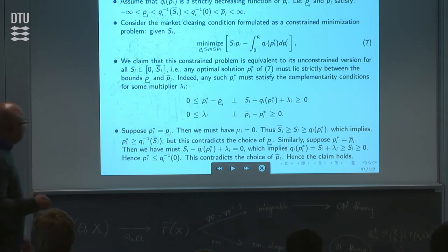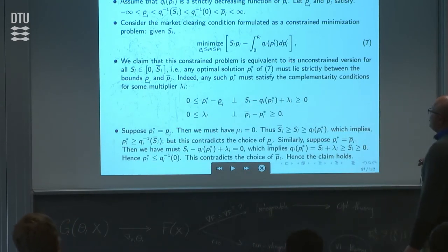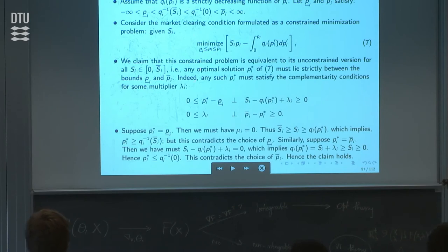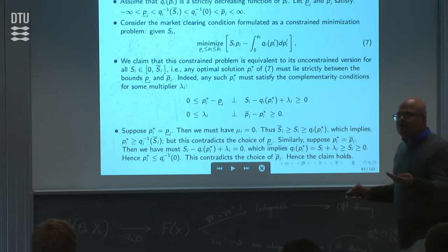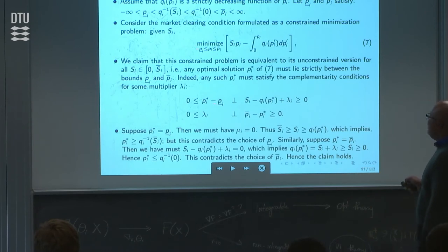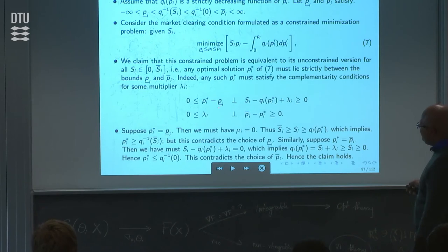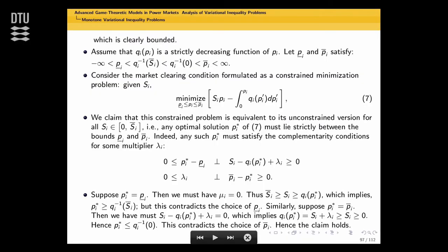To show this, write down the optimality conditions, assuming one of the bounds is active. We have pi_star minus p_bar_i greater than or equal to 0, and these are the complementarity constraints for each bound. If you differentiate, using the fundamental theorem of calculus you get qi times pi_star plus lambda_i. I start by assuming the optimal solution is at the bound—if it is, the bound actually led to the solution. But we can derive a contradiction from the assumed properties of qi.